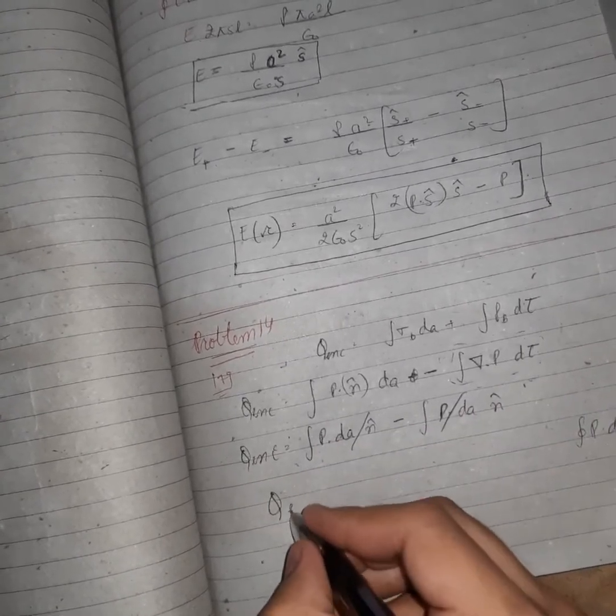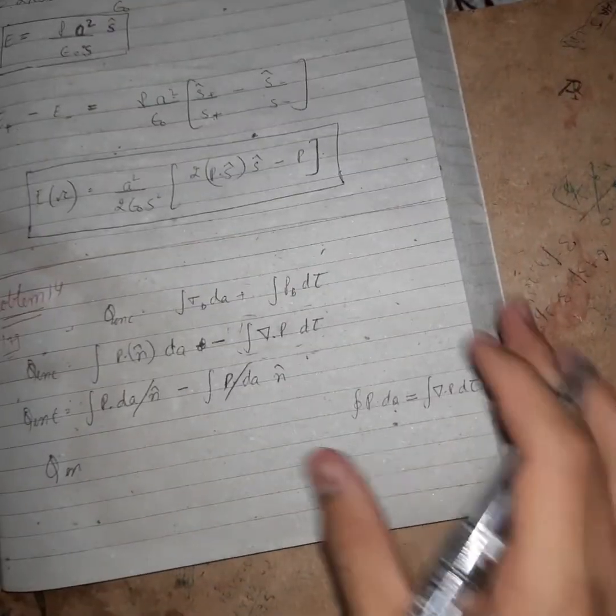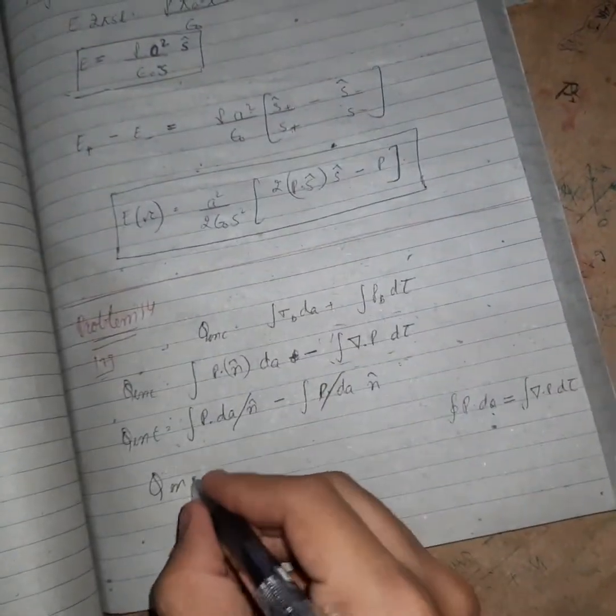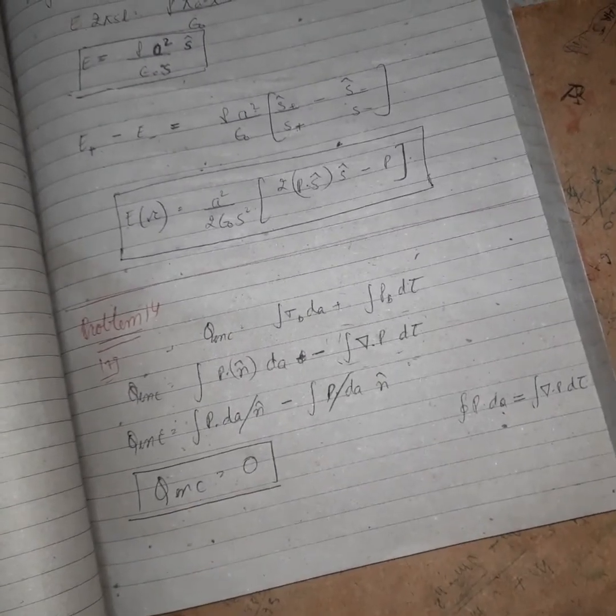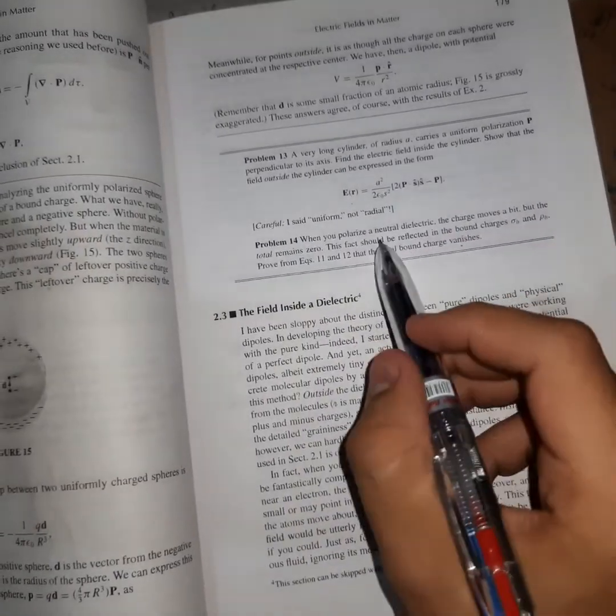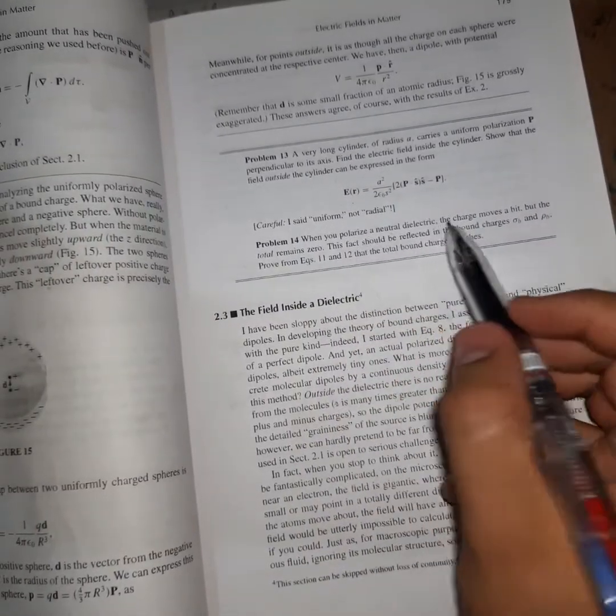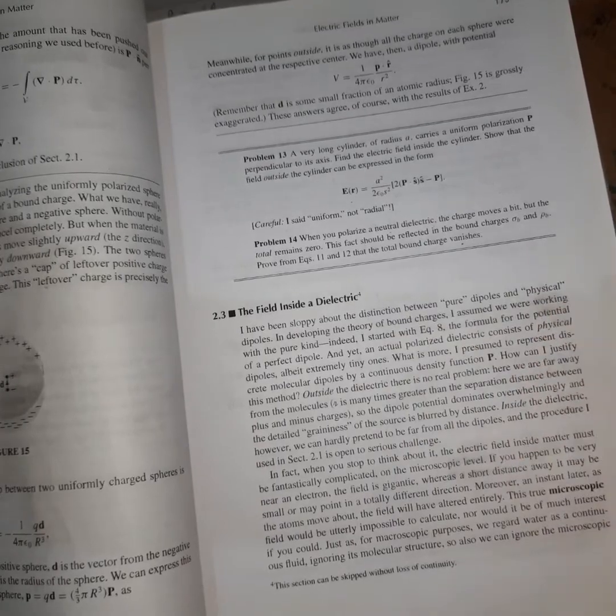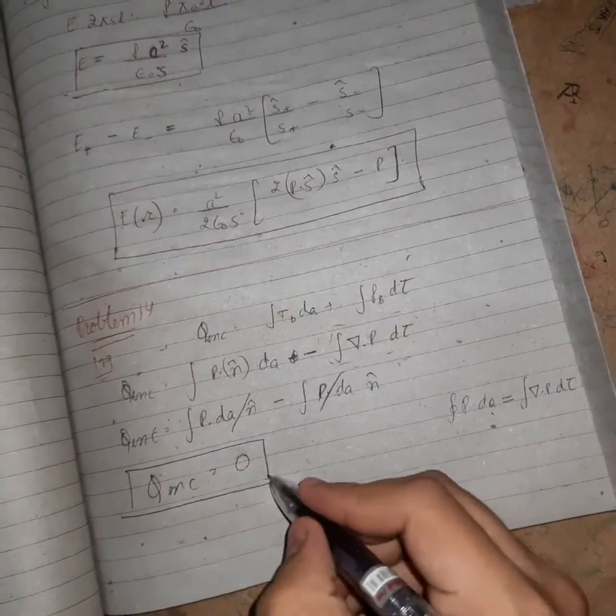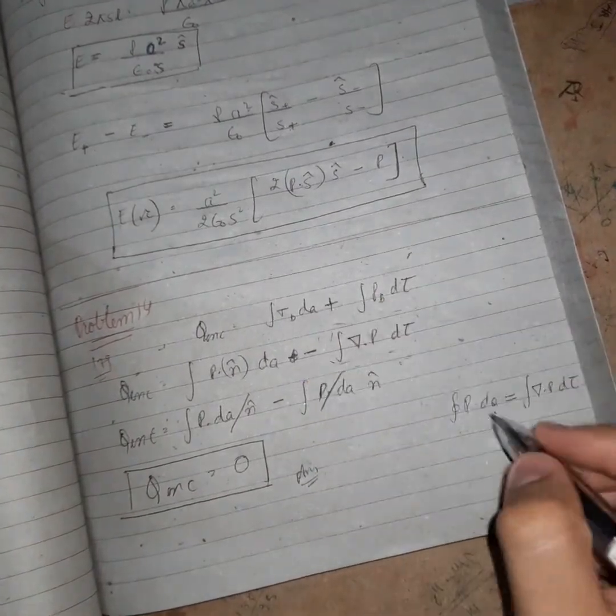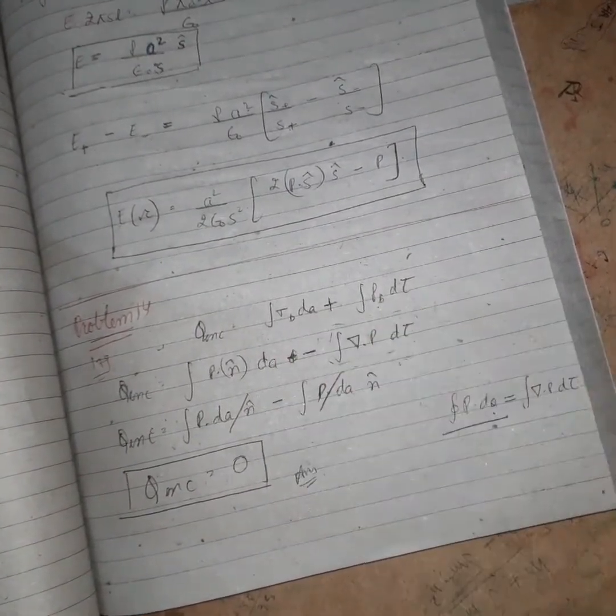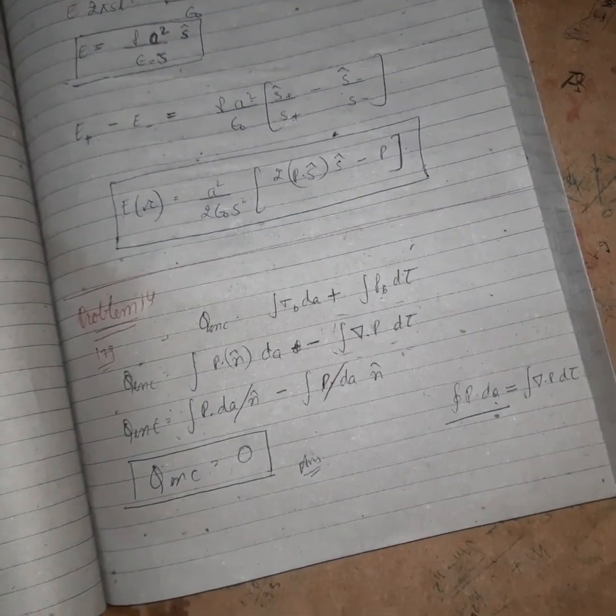We can see they both cancel out so q enclosed becomes zero. This proves from equation number 11 and 12 the total bound charge vanishes when we polarize a neutral dielectric and charge moves a bit. Total charge remains zero. You just need to apply the Gauss divergence theorem and the formula. So that's all for this video, see you in next video, bye-bye.